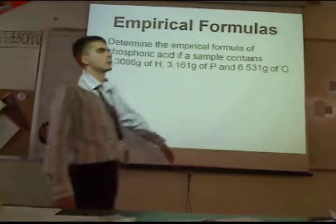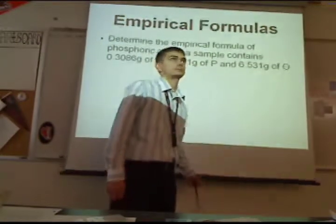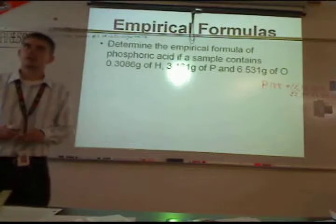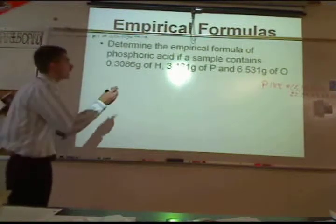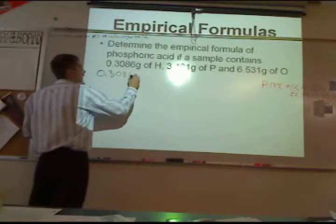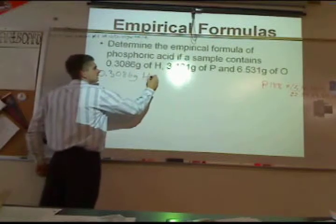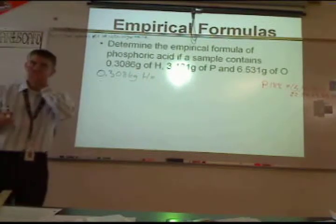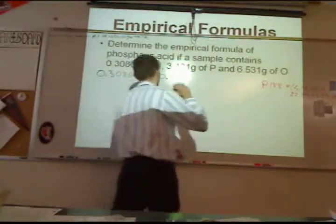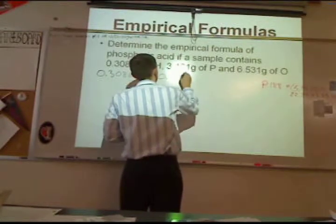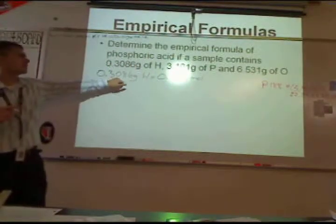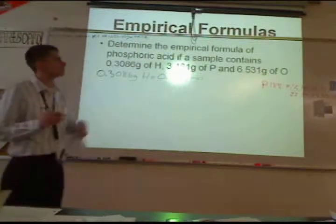Let's go smartboard mode and show you how this is done. Grams of hydrogen converted to moles of hydrogen gives you 0.61 moles. If you convert grams of hydrogen to moles of hydrogen, you get that. How many moles of phosphorus? 1.021 moles of phosphorus.